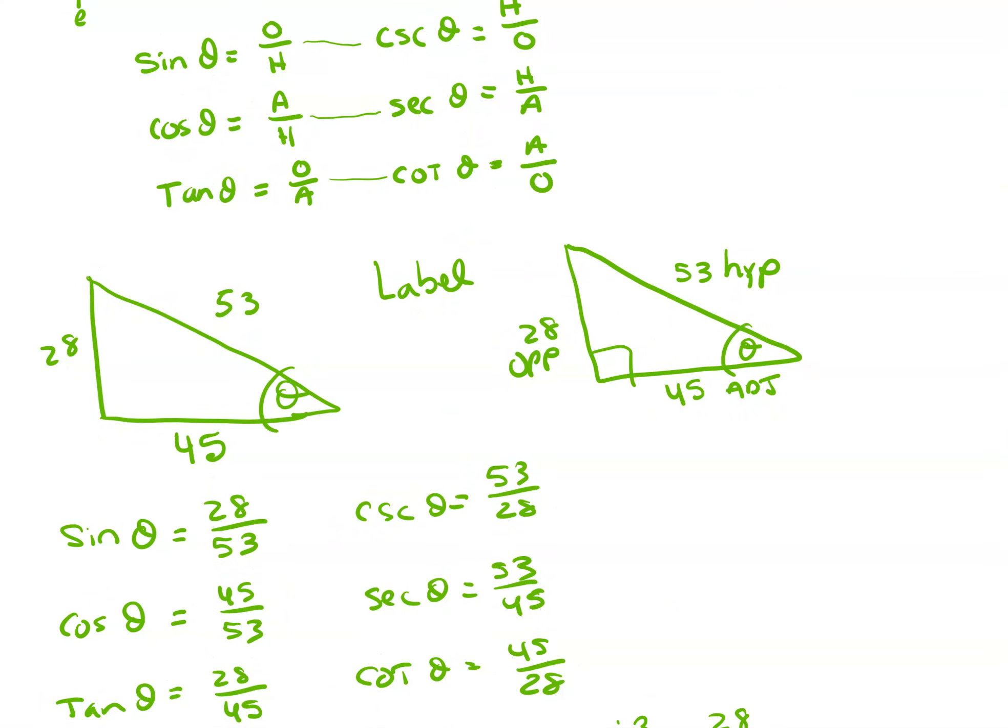They gave me the angle down in the corner. This is the right angle labeled. So this is my hypotenuse side. Again, I've labeled it over here, hypotenuse. The opposite side is directly across, so that's the 28. The adjacent side is the 45.